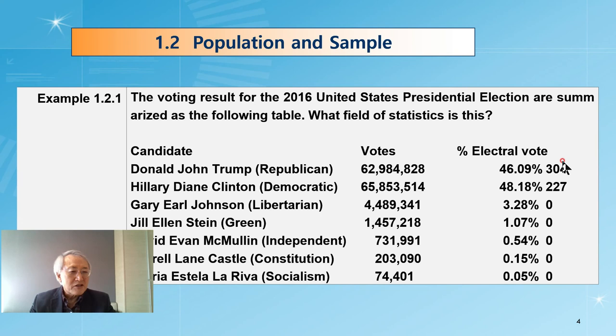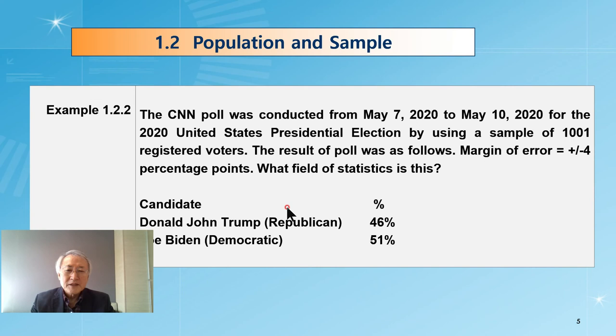Hillary Clinton got more votes, but for the electoral vote, Donald Trump got 304 and Clinton got only 227. This is the total result of a voting result. Therefore, it is population data, a summary table of population data.